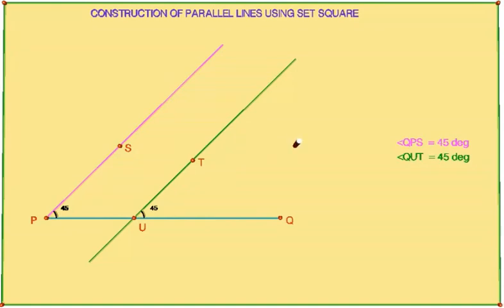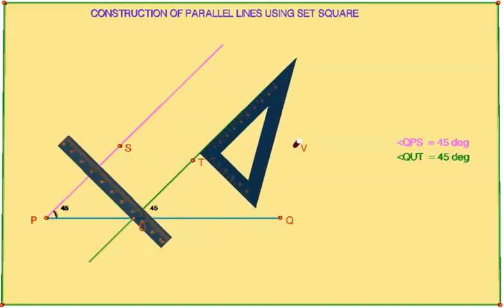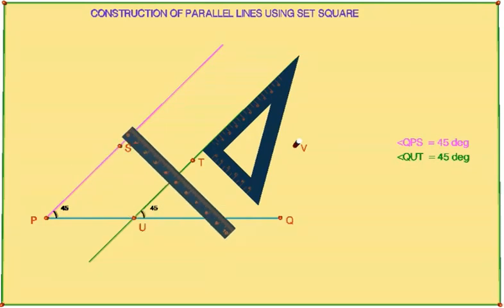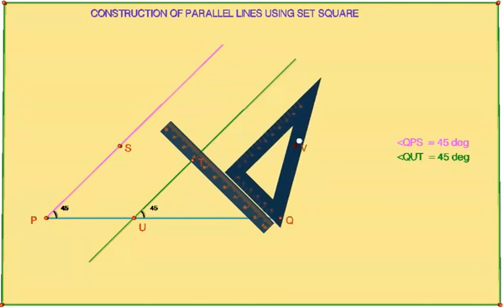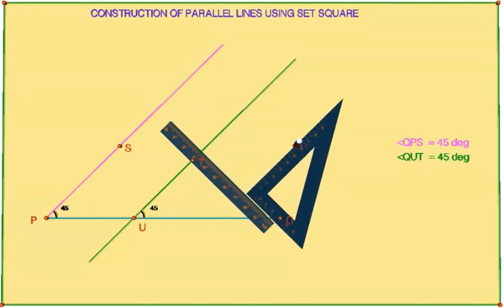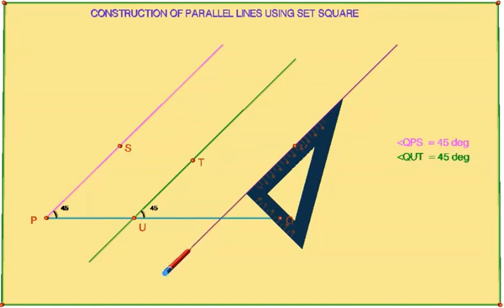Locate another point V in the plane. Now draw a parallel line using set square through V in the same way which we have discussed already. This line intersects PQ at W.